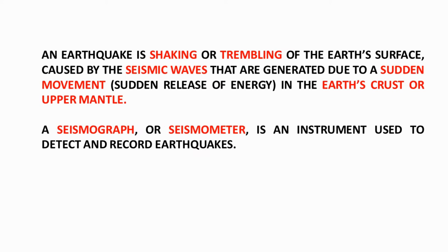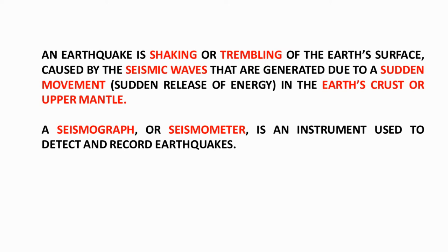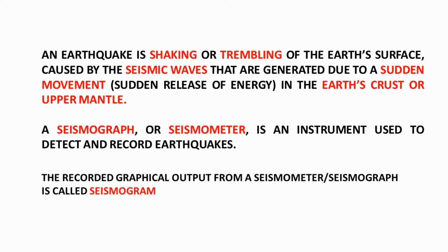So how do we record it? How do we measure it? There is something called a seismograph or seismometer — that particular instrument used to detect and record earthquakes. The recorded graphical output that we get from this instrument is called a seismogram. So remember the difference between seismometer and seismogram as key terminologies.